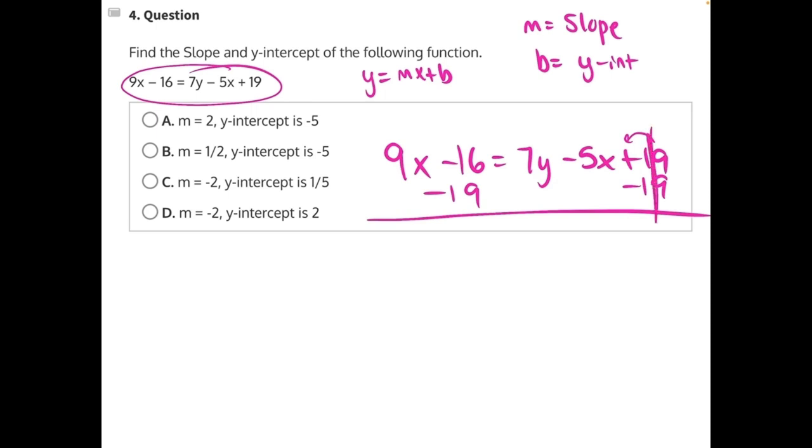Here these 19s will cancel, and we'll be left with 9x. Negative 16 and negative 19 are both like terms, so we can combine those together. Adding two negatives together is just like adding, but we'll keep the negative on there. 16 plus 19 is 35. So we'll have negative 35 equals 7y minus 5x.